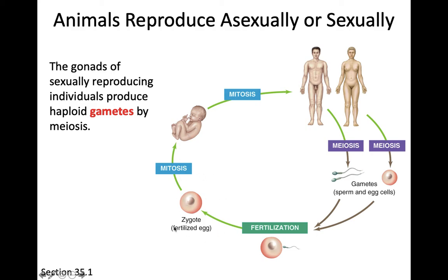A zygote is the very first cell of a new forming organism. Once this process occurs, this is the first cell that will develop into whatever the organism will become. It's a very interesting process going from haploid cells — half DNA from your father, half DNA from your mother — uniting them to form a diploid zygote that contains all the information needed to eventually form another fully developed organism.